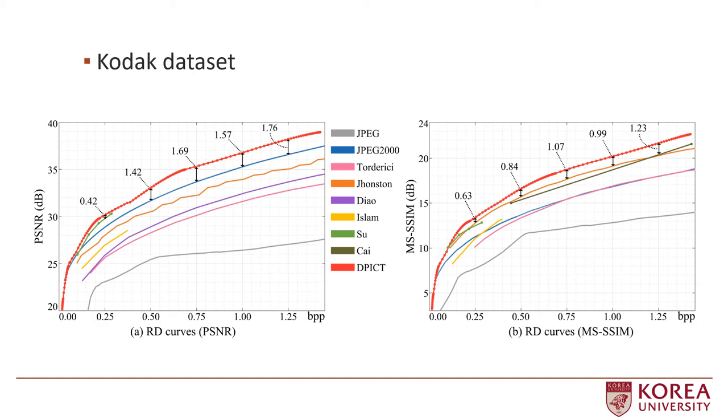We compare the proposed DEPICT with conventional progressive codecs on the Kodak dataset. At every rate, DEPICT provides the highest PSNR and the highest MS-SSIM. Furthermore, as indicated in red dots, DEPICT supports FGS for images.